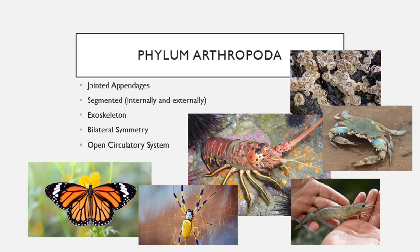Next is phylum Arthropoda. These are a lot of animals — a lot of them are in the ocean, but most are actually on land, like butterflies and spiders. These are animals with jointed appendages. They are segmented — you can break them up into different parts: head, torso, tail. They have an exoskeleton usually made out of chitin, they do have bilateral symmetry, and they also have an open circulatory system, which means their blood isn't contained in veins or arteries — it's swishing around in their body cavity all in one.